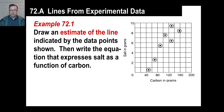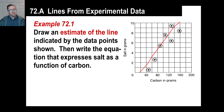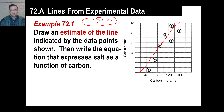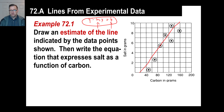We can choose any one of these lines - draw an estimate of the line. Write the equation that expresses salt as a function of carbon. Anytime anybody asks you in algebra one, algebra two, trigonometry, calculus, whatever - you write y equals slope times x plus y-intercept. Your job is to find the slope and the y-intercept. The x is the carbon and the salt will be the y.